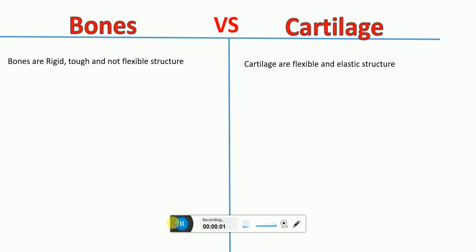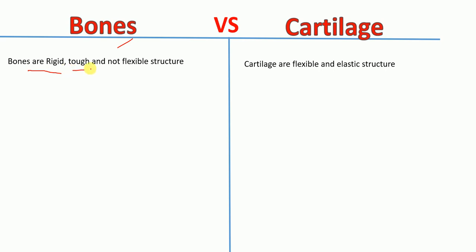Hello everyone. In this lecture today, I'm going to talk about the differences between bones and cartilage. The first difference is that bones are rigid, tough, and not flexible structures, whereas cartilage is flexible and elastic.